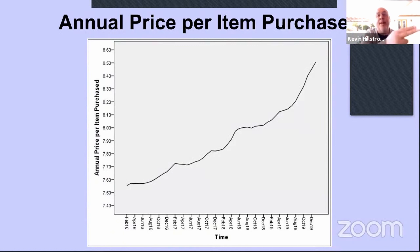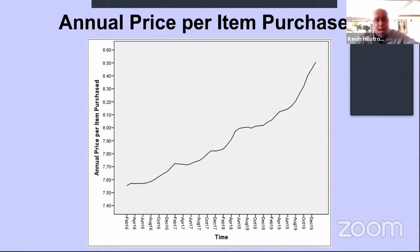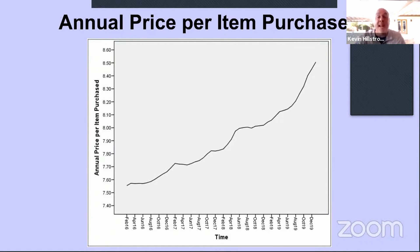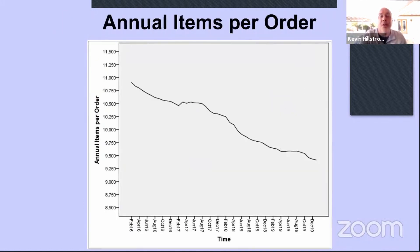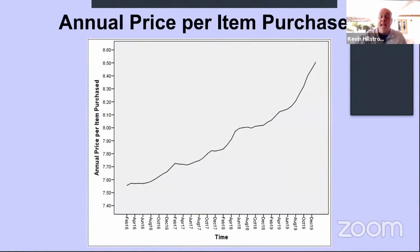This relationship — items per order decreasing and price per item increasing — comes up in 75% of my projects. Most of the time, when a business is struggling, someone says we've got to increase our gross margin dollars to be more profitable. Therefore, when they issue new items, those items are going to be $8.50, whereas items that have always sold are at $7.50. When I see this relationship, I know there's going to be a product issue and we're going to have to talk with the merchandising team and the finance people.